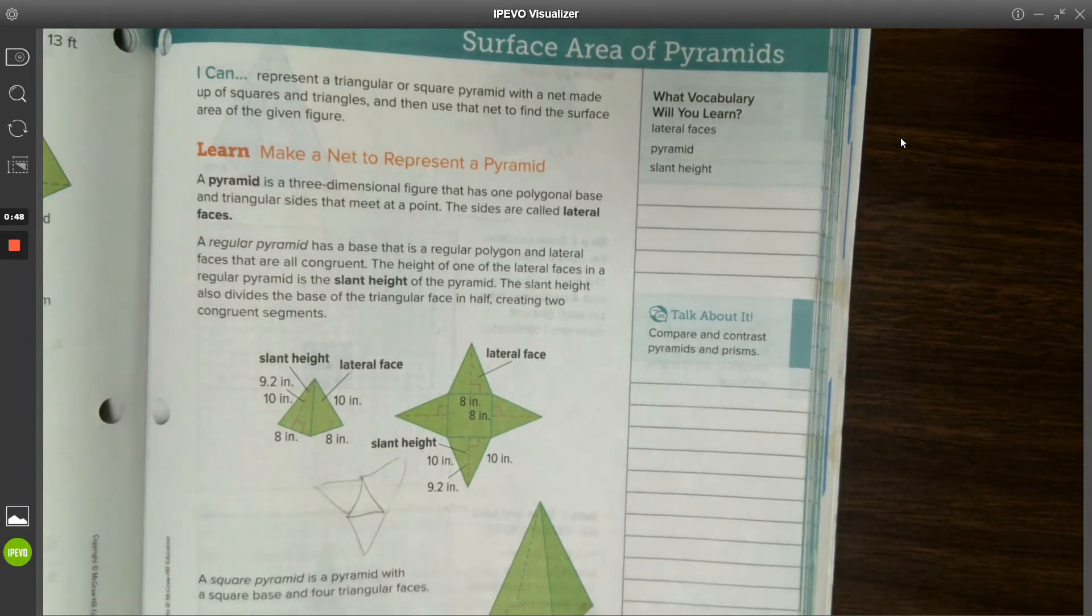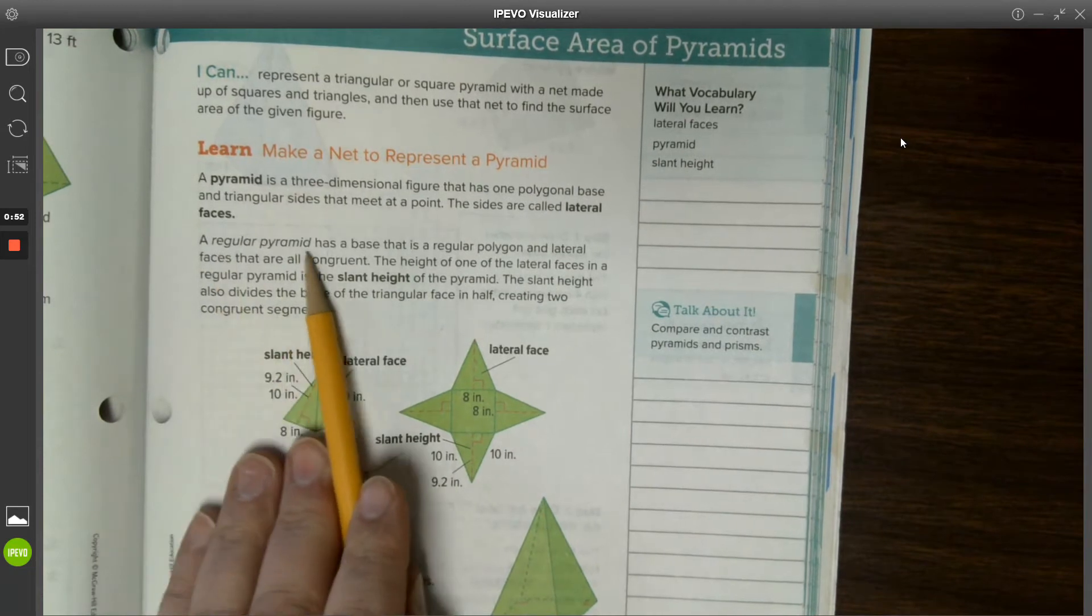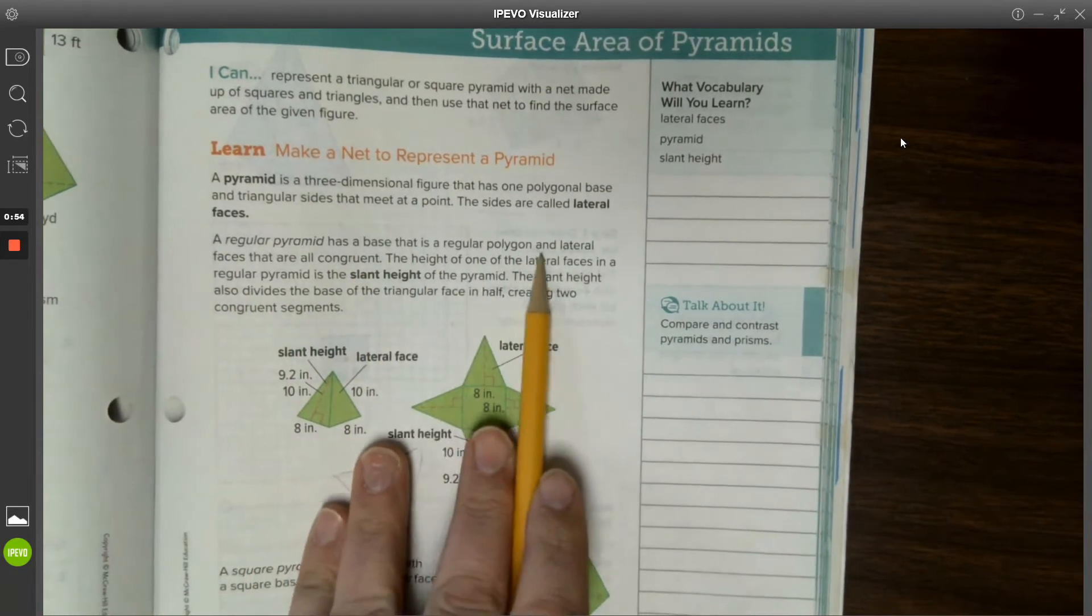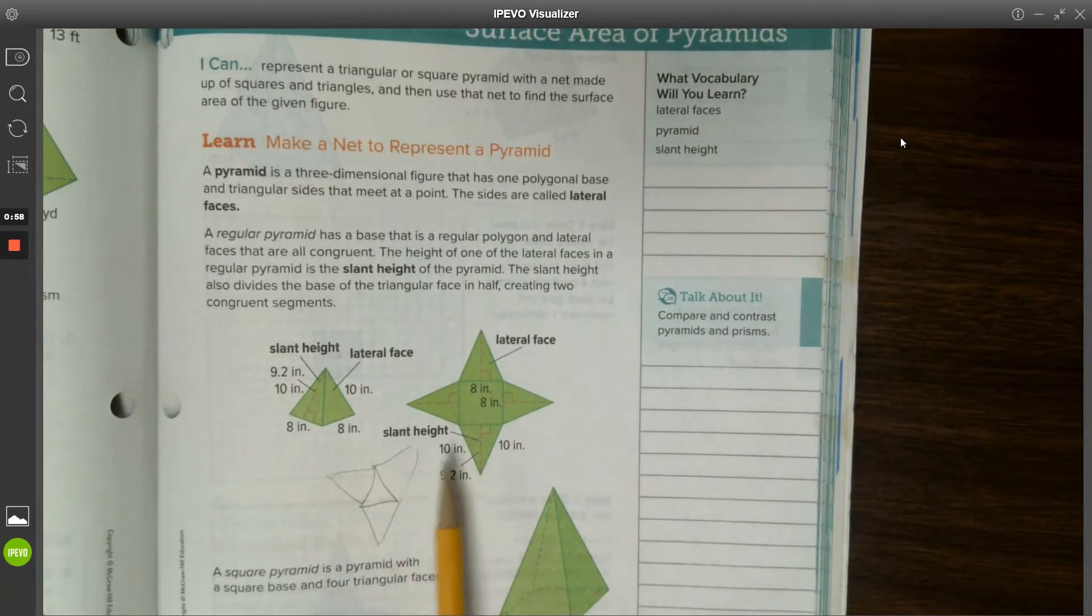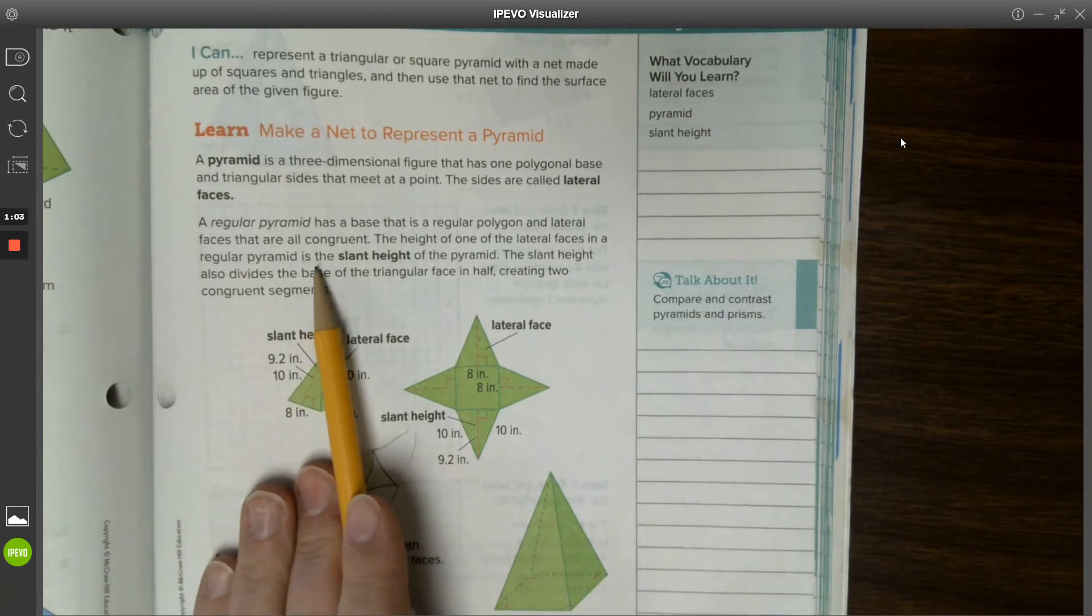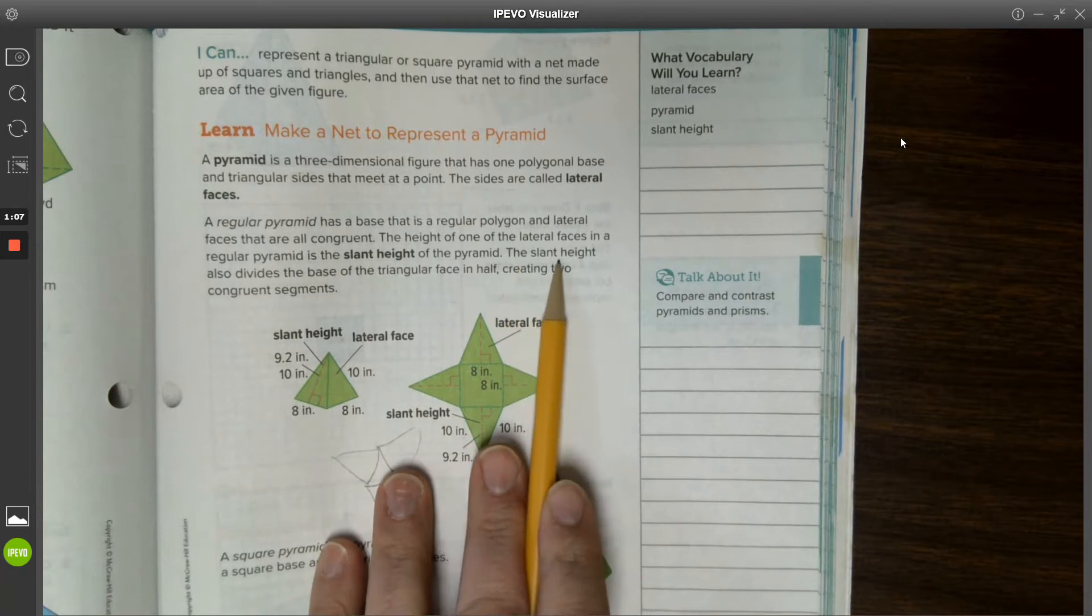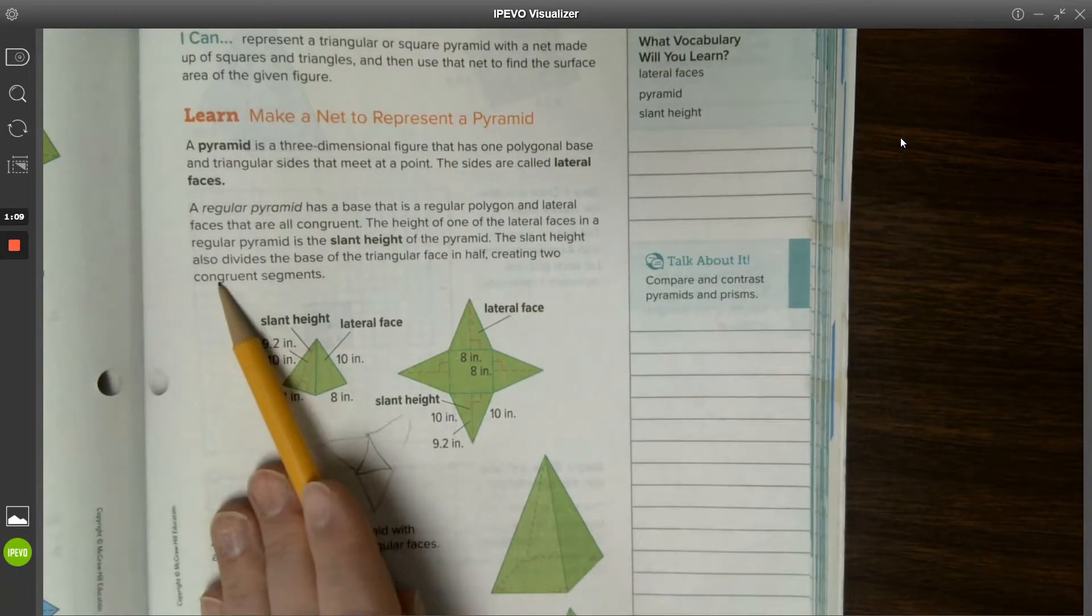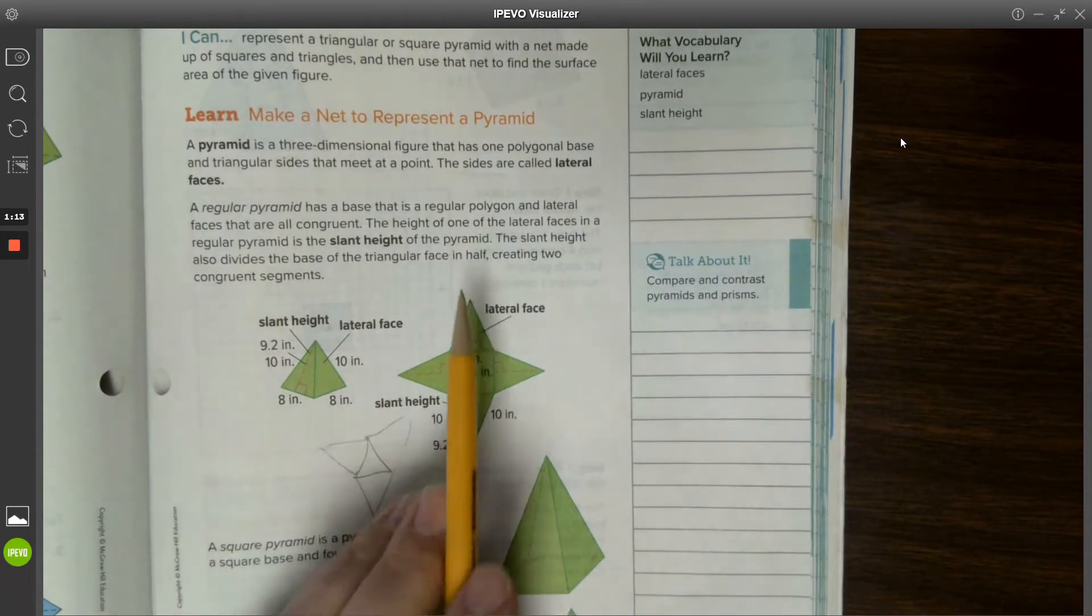Those are the two different types of pyramids that we will see. A regular pyramid has a base that is a regular polygon and lateral faces that are all congruent, so this would be an example of a regular pyramid. The height of one of the lateral faces in a regular pyramid is the slant height of the pyramid. The slant height also divides the base of the triangular face in half, so here we have it going directly in half creating two congruent pieces.